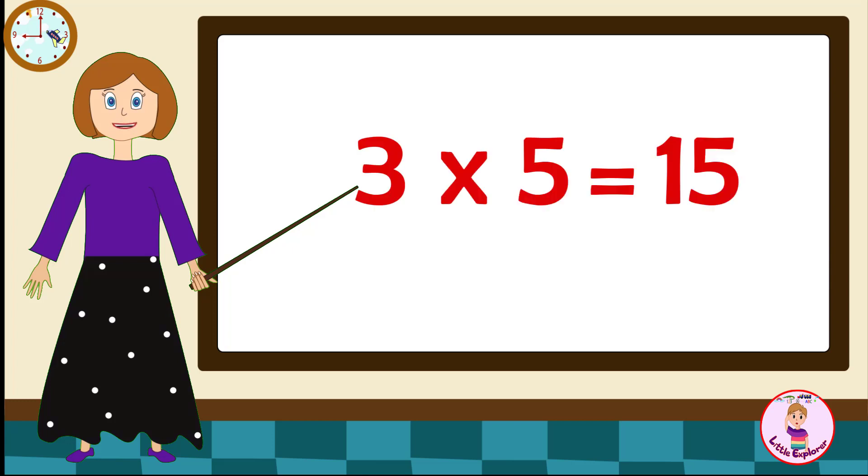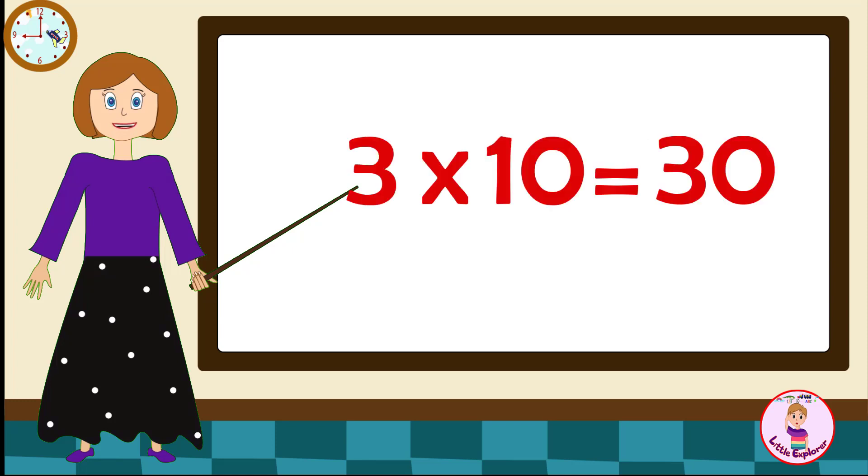Three fives are fifteen. Three sixes are eighteen. Three sevens are twenty-one. Three eights are twenty-four. Three nines are twenty-seven. Three tens are thirty.